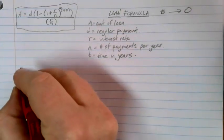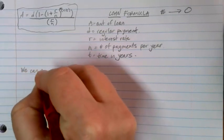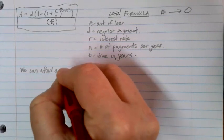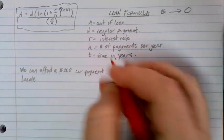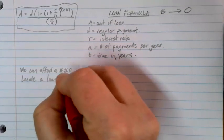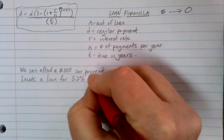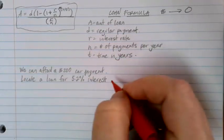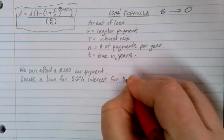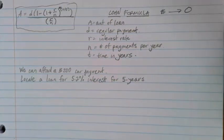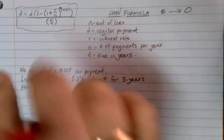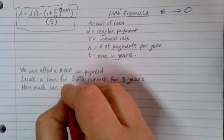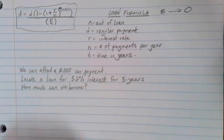Let's try a couple of examples here. So suppose that we can afford a $200 car payment. We're able to locate a loan for 5.2% interest, and car loans typically are five-year loans. So with this information, let's figure out how much can we borrow, how expensive of a car can we afford?